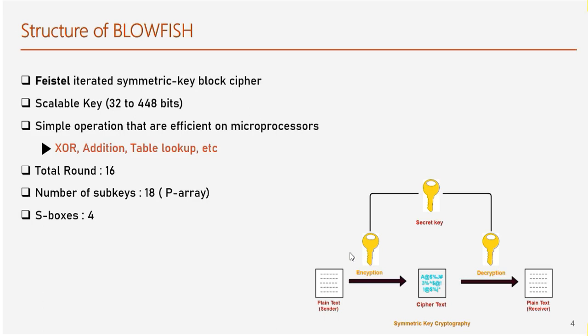The key is scalable from 32 bits to 448 bits, but by default it is 128 bits. It uses simple mathematical operations which are efficient on microprocessors. To encrypt a block of 64-bit plain text, it takes 16 rounds to execute.